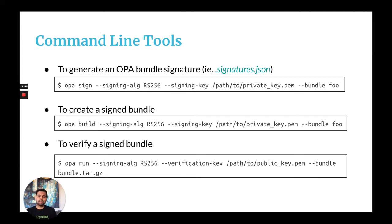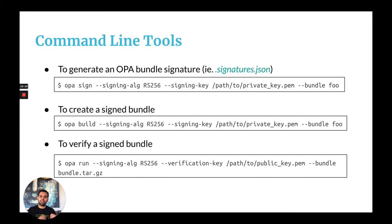We're all familiar with the OPA build command, which is used to generate regular bundles. Now you can also use OPA build to generate signed bundles — it takes the same parameters as the sign command: the algorithm and the key. And finally, if you need to verify a signed bundle, the OPA run command takes the signing algorithm and the verification key. If you're using RS-256, you provide the public key; for HS-256, you provide the secret. These are the command line tools OPA provides for signed bundles.